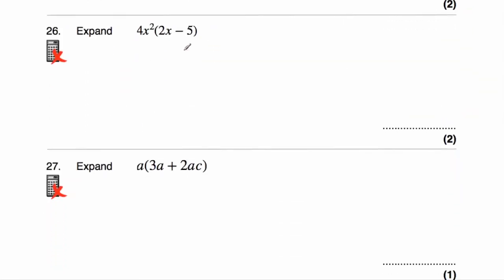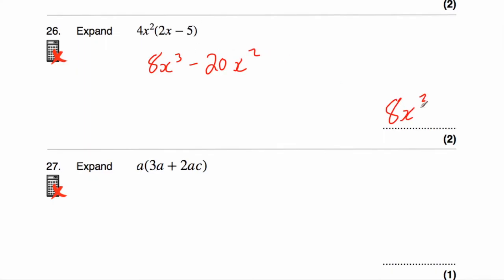Question number twenty-six asks us to expand 4x²(2x − 5). We're going to multiply both terms by 4x². Two x times 4x² — four times two is eight, and x squared times x is x cubed. Then minus, and 4x² times five — four times five is twenty and then x squared. The answer is 8x³ − 20x².